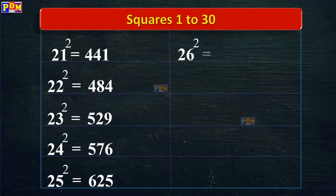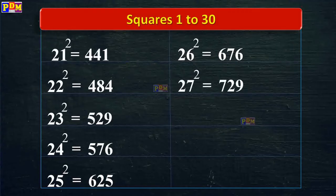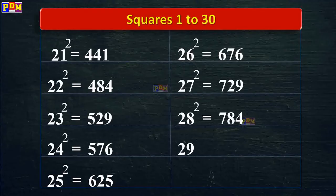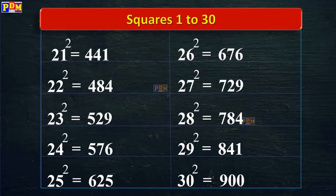26 square is equal to 676. 27 square is equal to 729. 28 square is equal to 784. 29 square is equal to 841. 30 square is equal to 900.